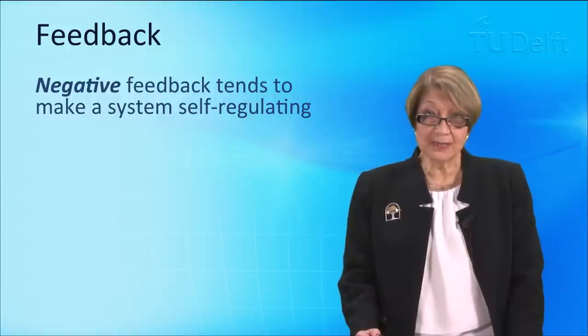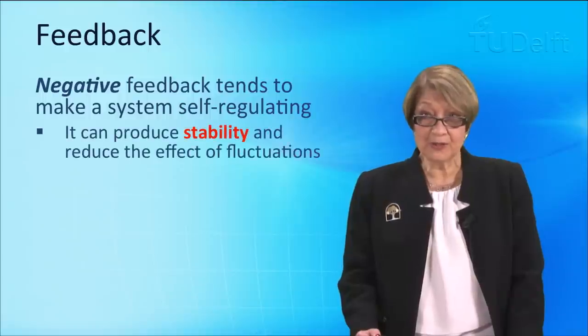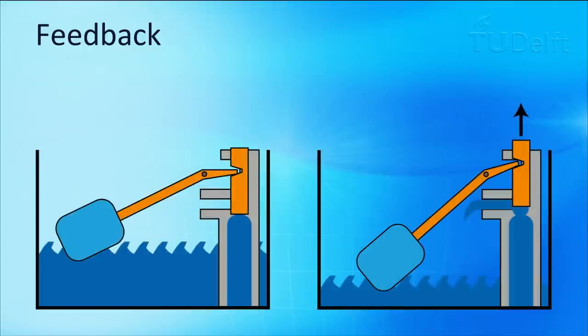Negative feedback tends to make a system self-regulating and it can produce stability. Let me then explain that. This is a very simple mechanistic system. It's a ball cock. So, when you press the lever, the water will empty. When the water empties, the valve opens and the water comes in and it refills the system. As the water rises, the ball cock rises and then when the water reaches the right level, the valve is closed and no more water comes into the system. That is a very efficient, very simple system and it has a single equilibrium point.